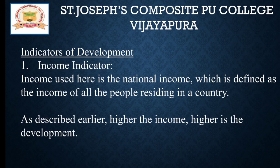The first indicator is the income indicator. Income here refers to national income — the total volume of goods and services produced by a country during a particular period, that is, in a year. If a country's national income is high, then economic welfare is possible. National income is essentially the income of all the people residing in a country.